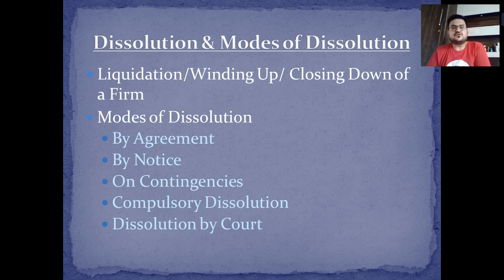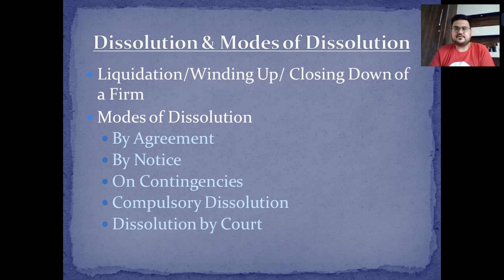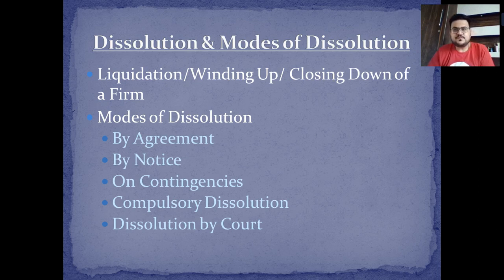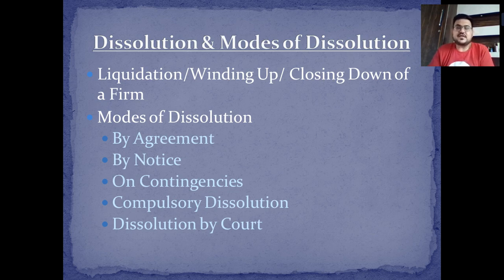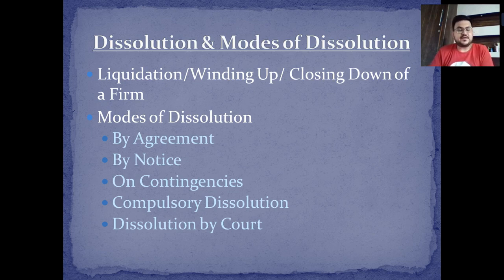Now we talk about dissolution and modes of dissolution. Dissolution means shutting or ending the firm — liquidation, winding up, closing down. How to dissolve? You can do it by agreement — if three or four partners decide not to continue, the firm can be dissolved. By notice, one or all partners can give notice to each other. On contingencies, an emergency may arise forcing dissolution. Compulsory dissolution occurs when losses are so severe that assets must be sold to pay back people. Finally, dissolution by court is a legal mandate that must be followed.